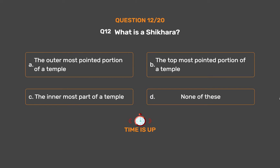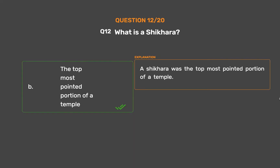The correct answer is Option B: The topmost pointed portion of a temple. A Shikara was the topmost pointed portion of a temple.